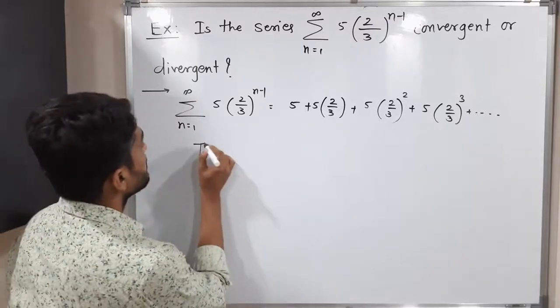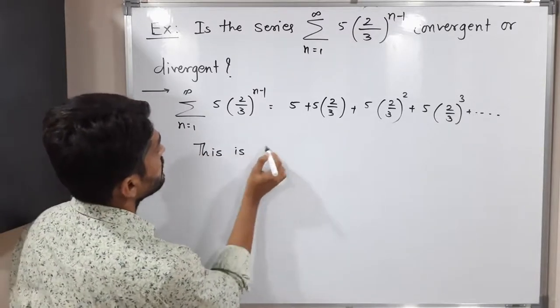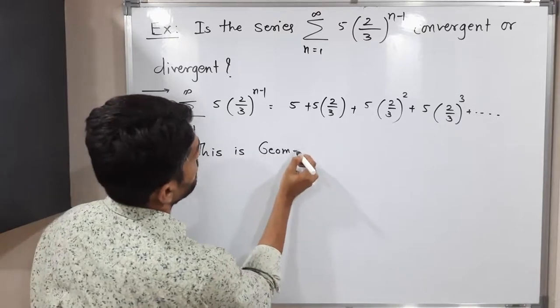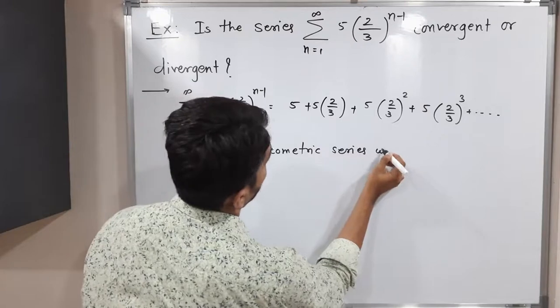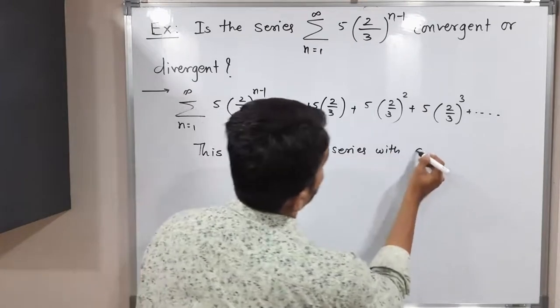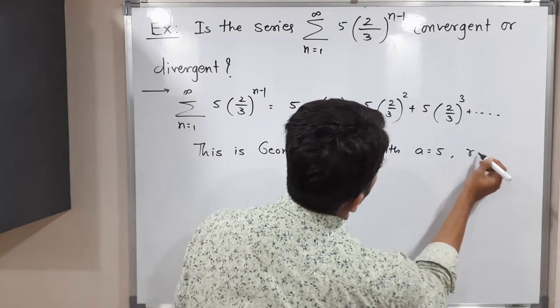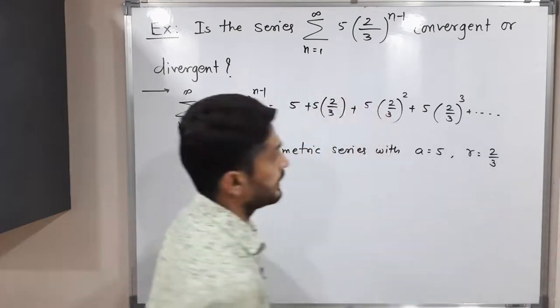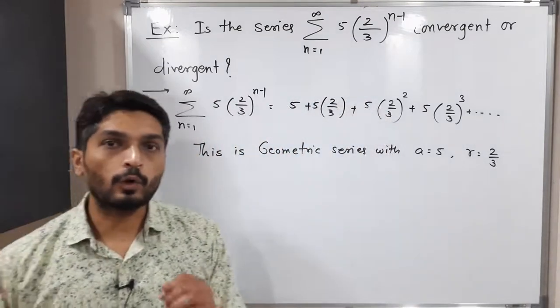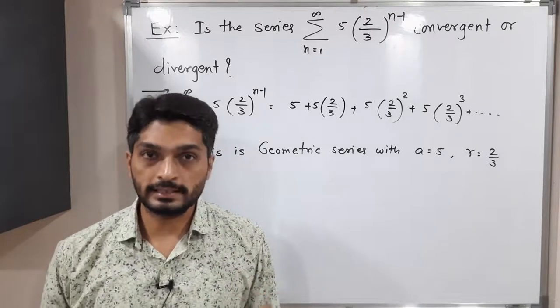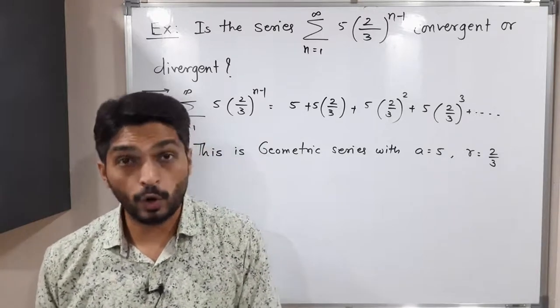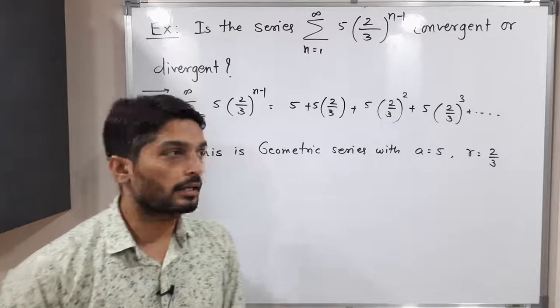This is geometric series with first term 5 and common ratio is 2 by 3. So let me mention that thing. This is a geometric series. In our previous videos, we have already seen, if we have a geometric series with mod r less than 1, then we say the series is convergent. So let us find mod r.